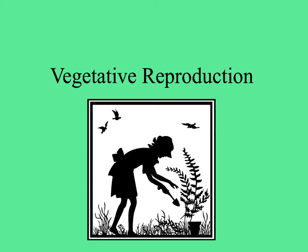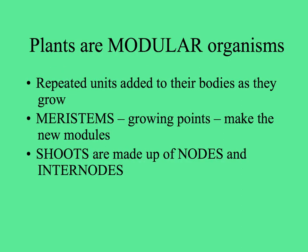One big way that plants are different from animals is they have a great capacity for perpetuating the genotype through vegetative reproduction. This is because plants are modular organisms — they're made of a bunch of little modules put together, repeated units that are continually added to their bodies as they grow. The growing points of plants are called meristems, and meristems make these new modules.